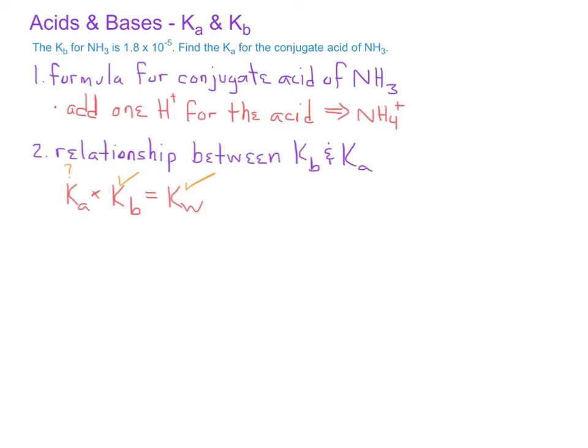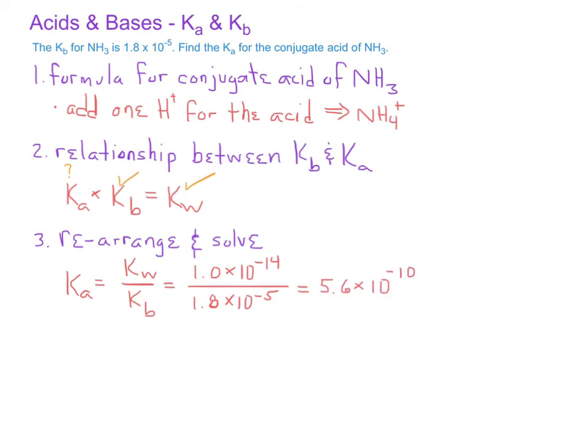When we rearrange the equation and we enter the values in our calculator, we find that the value for Ka for NH4 plus is 5.6 times 10 to the minus 10.